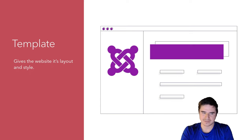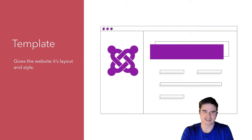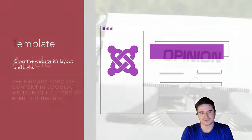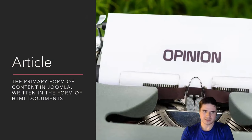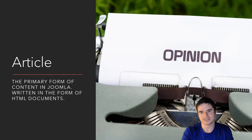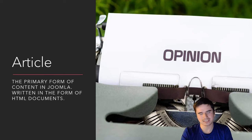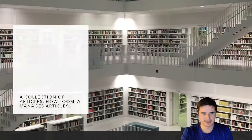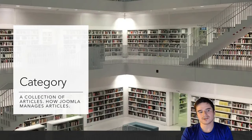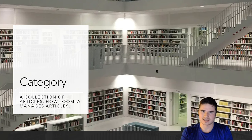The template is what gives the website its layout and style. Different websites have different templates, and we can customize our templates with color schemes and custom branding to make our website stand out. An article is the primary form of content in Joomla — they are HTML documents. Joomla saves them in the database, and when a user requests one and is permitted to access it, Joomla generates the page and sends it back. A category is a collection of articles — it's how Joomla manages articles, allowing you to sort them into different custom categories.